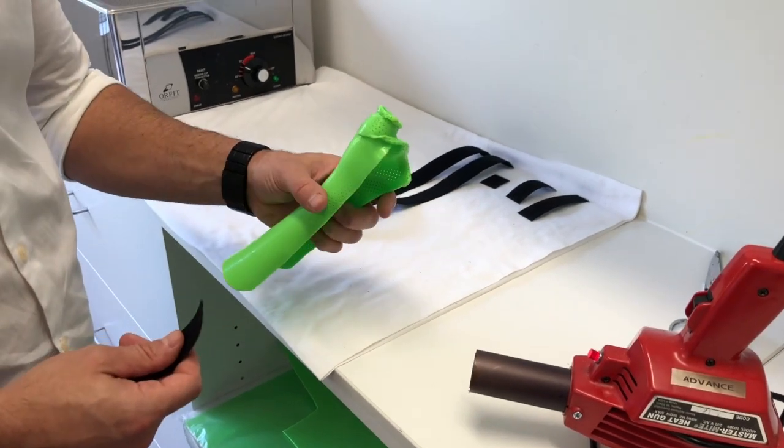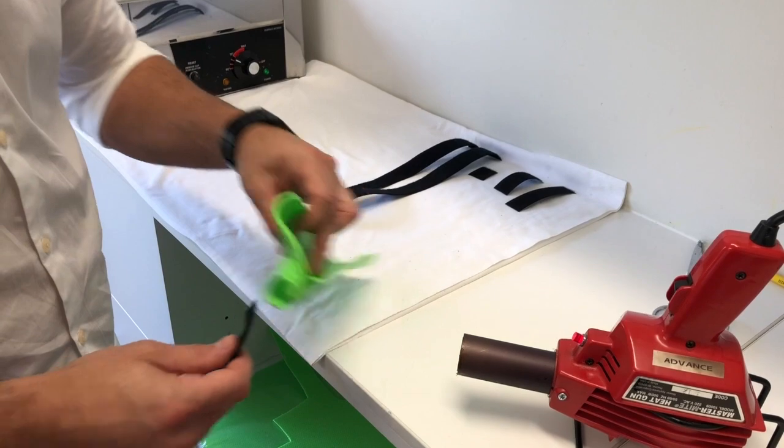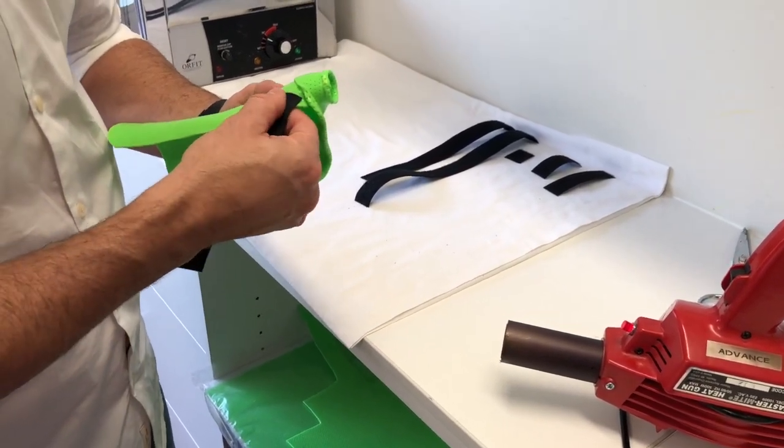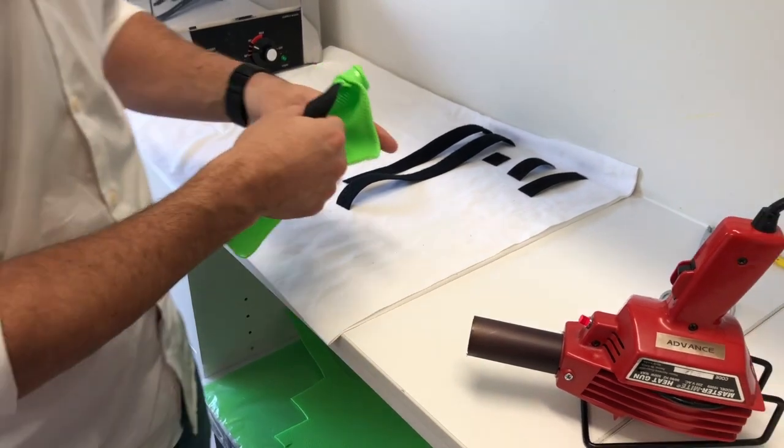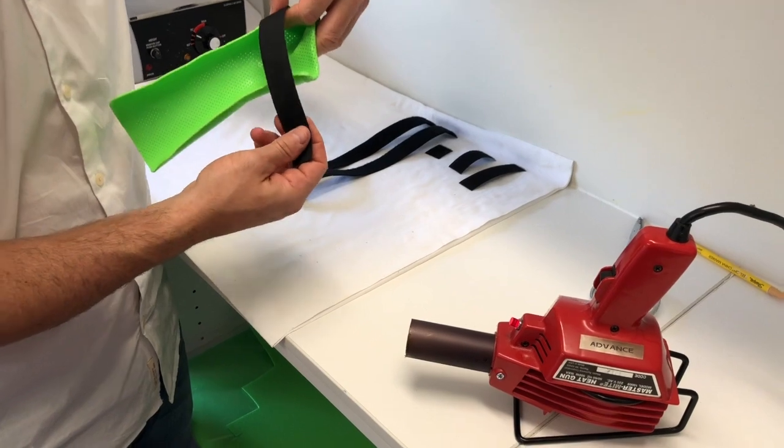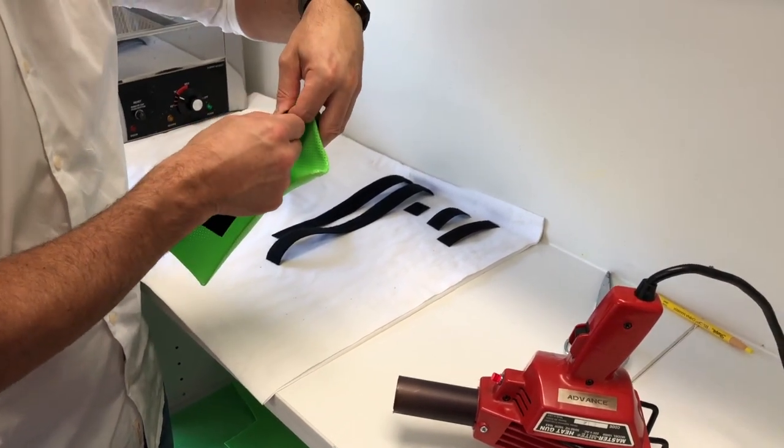So we're just finishing off by putting our straps on. I'm going to heat the thermoplastic, heat the velcro and bond the two together. Just be mindful, we're using Orficast Colors here. So it does have a non-stick coating on it, which means that our straps don't stick to it quite as well as they do with the Orficast Light.